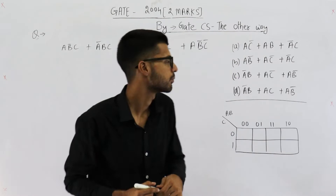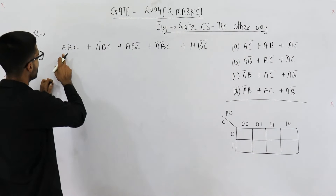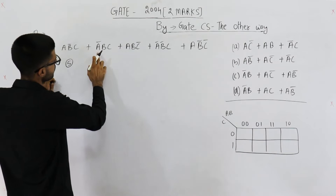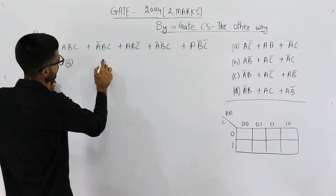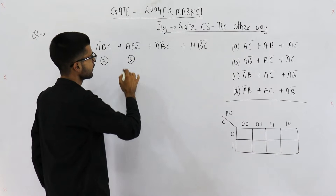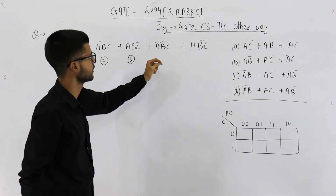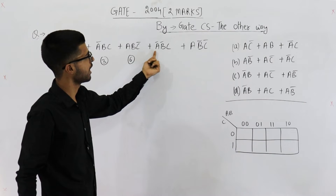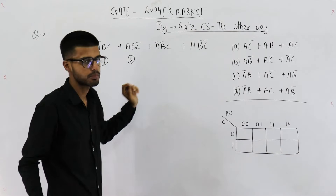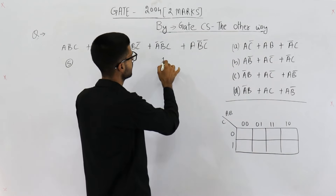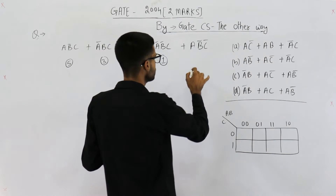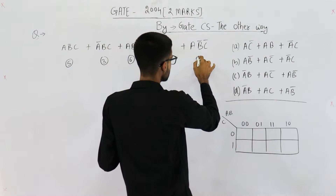We'll fill the K-map. The minterm 1 0 1 means it is 5. Then 0 1 1 is 3, and 1 1 0 is 6. For 0 0 1: bar on A means A is 0, bar on B means B is also 0, and no bar on C means C is 1 — so that's 0 0 1, which is 1, and 1 0 0 is 4.